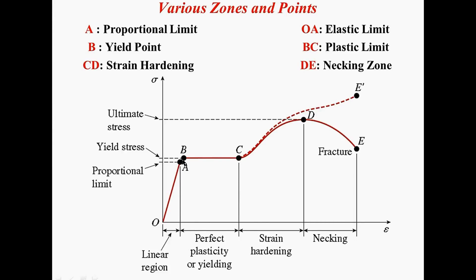If we further go on increasing load, we get point B, which is the yield point. Point A and point B are close to each other. At point B, we can note the yield stress. B to C is the plastic zone. Within this region, if we further go on increasing stress acting on the member, the deformation is permanent and hence the material will not regain its original length.